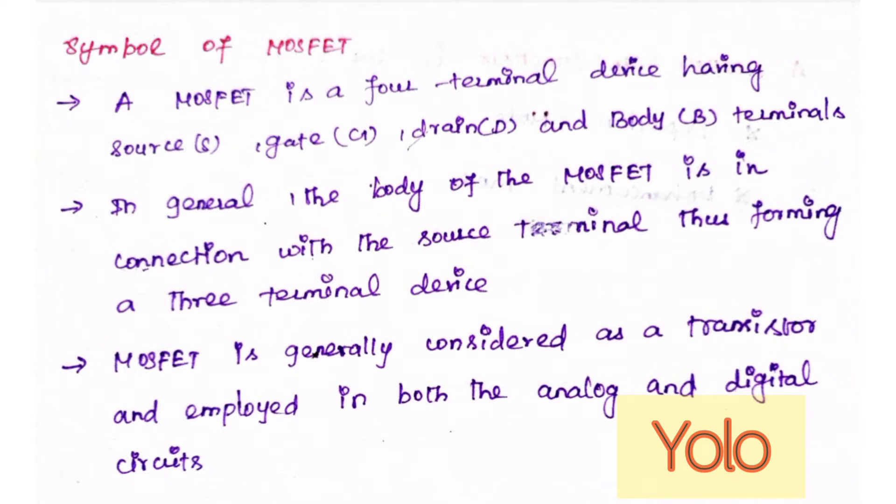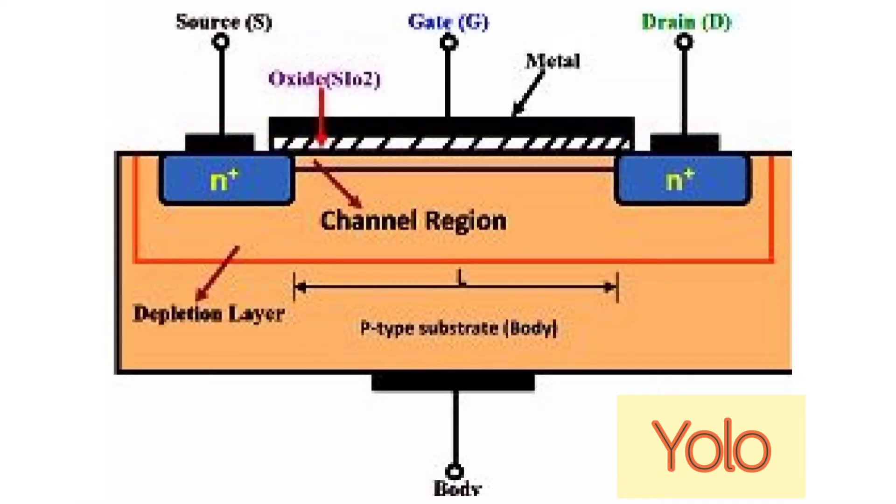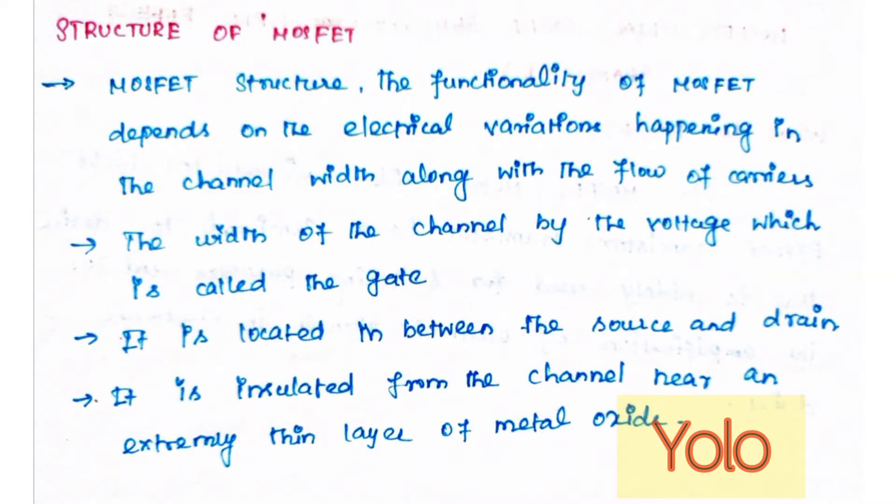Structure of MOSFET: The functionality of MOSFET depends on the electrical variations happening in the channel width along with the flow of carriers. The width of the channel is controlled by the voltage which is called the gate. It is located in between the source and drain.